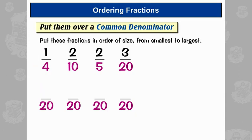So we do the same thing to the top: one times five is five. From ten to twenty we times by two, so two times two is four. From five to twenty we times by four, so that gives us eight. From twenty to twenty it stays as it is, so three stays as three.